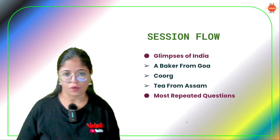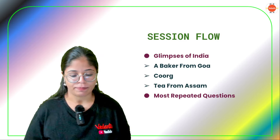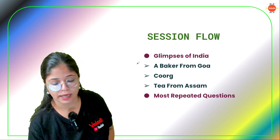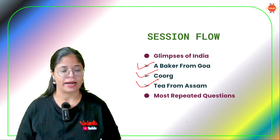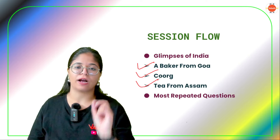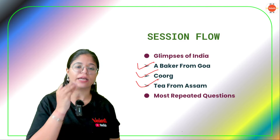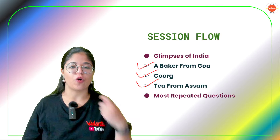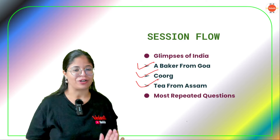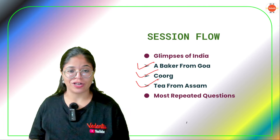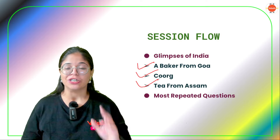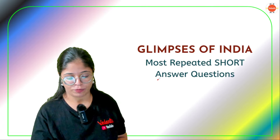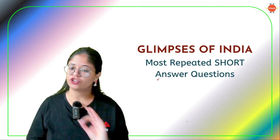Quickly, let's discuss the session flow of the day. As I have already discussed, there are three parts of Glimpses of India: A Baker from Goa, Coorg, and Tea from Assam. These three parts have the most important short and long question answers — the most repeated ones. Extract-based questions for Glimpses of India we are not taking today. I hope you are ready with your copy and pen to take notes, because some questions I have seen in the sample paper are the same ones that appear in the boards. So please keep your pen and paper ready.